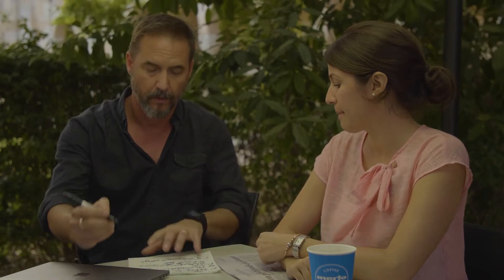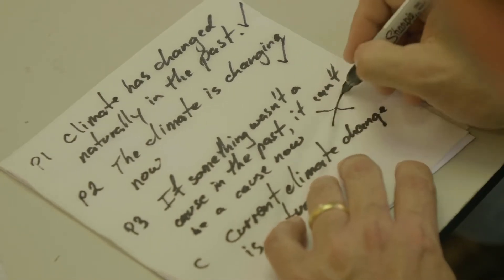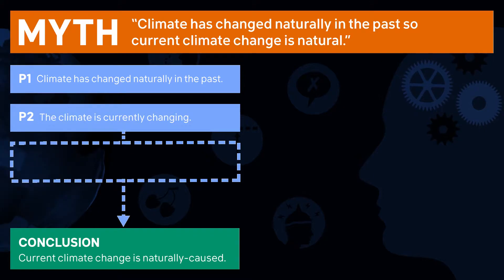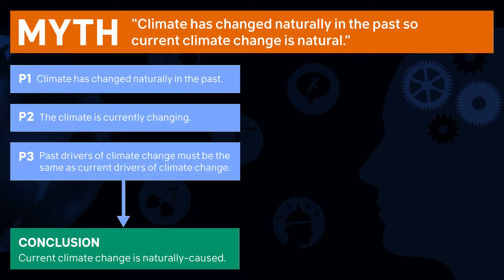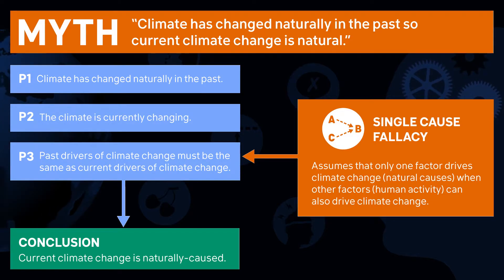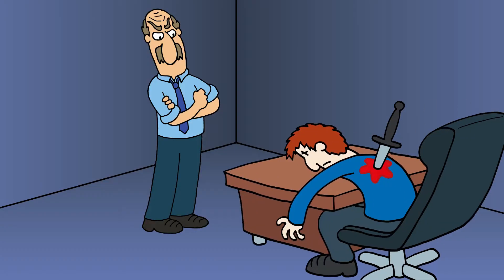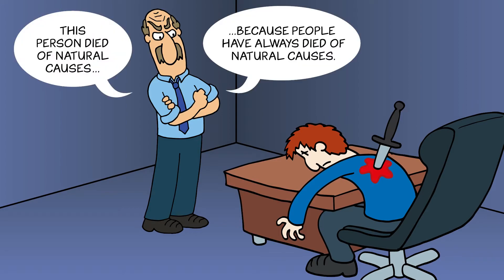Once you have a valid argument you're ready for step three: check that the premises are true. In this case the third premise is false — it commits the single cause fallacy, ignoring that there can be multiple factors that cause climate change. The argument 'climate has changed naturally in the past so it must be natural now' assumes whatever caused climate change in the past must be causing it now. This is like finding a dead body with a knife and arguing the person died of natural causes because people have died of natural causes in the past.